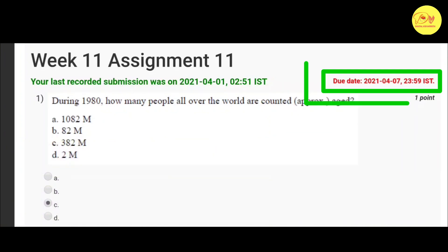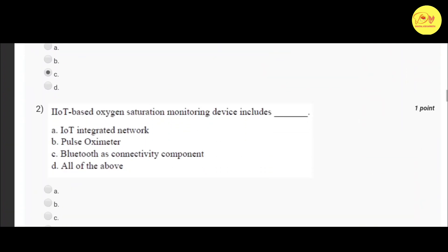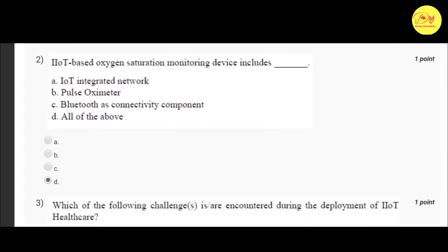Our first question is: During 1980, how many people all over the world are counted approximately aged? Correct option is C, 382 million. Our second question is: IIoT based oxygen saturation monitoring device includes? Correct option is D, all of the above - IoT integrated network, pulse oximeter, Bluetooth as connectivity component.